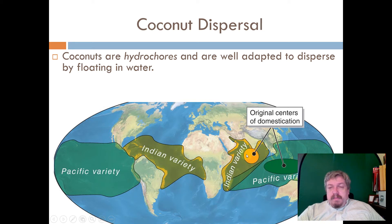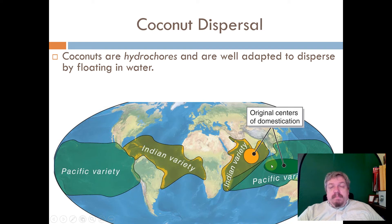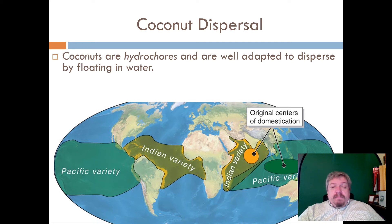Humans domesticated coconuts two different times in two different ways and brought them along as they traveled. Polynesians, as they expanded through the Pacific Ocean, went through Papua New Guinea and eventually colonized all the islands of the southern Pacific, all the way to Easter Island and Hawaii, bringing coconuts with them. This expansion beyond the natural range was the direct result of human interaction.